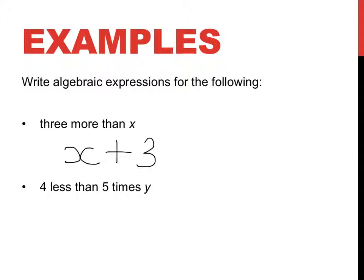4 less than 5 times y. Now, less is subtraction. 4 less. 4 goes on the right-hand side because it's 4 less than. 5 times y. Now, by default, I'll probably want to do 5 times y. But I'm hoping you guys remember from the last few years that I don't write 5 times y with the multiplication. I simply write 5y.